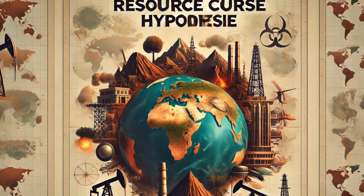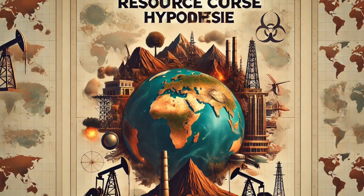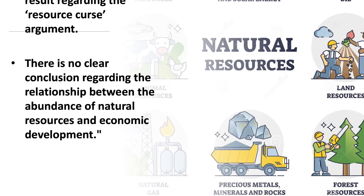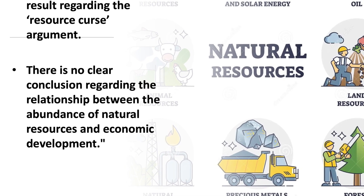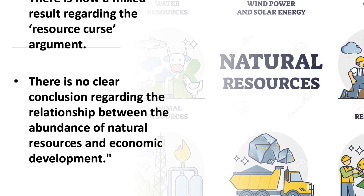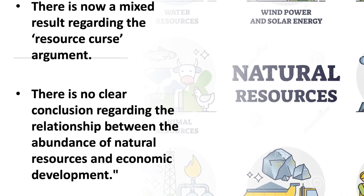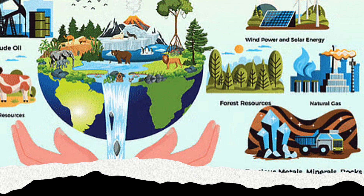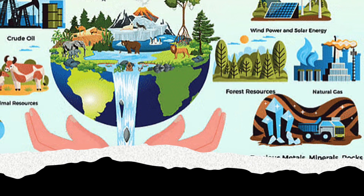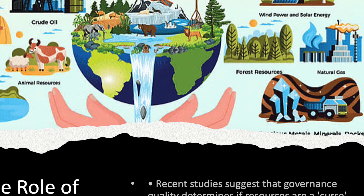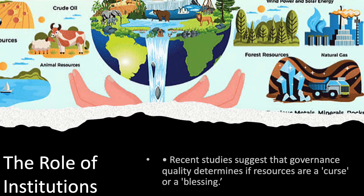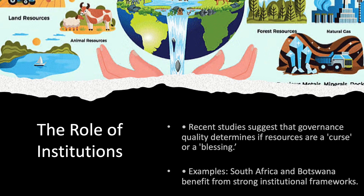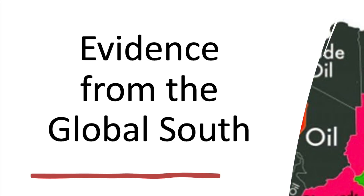Due to this theory, there is now an awareness that poorer developing countries which are rich in natural resources may fall victim to lower economic growth and development. However, recent empirical findings present mixed results regarding the resource curse argument and suggest there is no clear conclusion regarding the relationship between the abundance of natural resources and economic development. Some recent literature argues that it is not the abundance of resources but rather factors like institutional quality and governance that affect whether resource abundance brings positive or negative development outcomes.